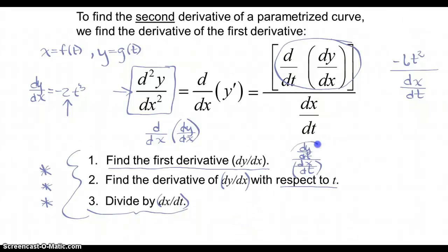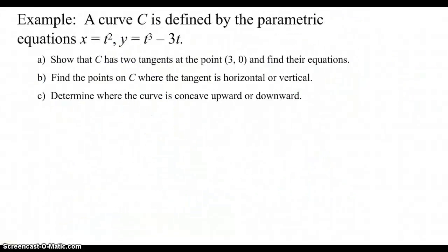Step 1: find dy/dx. Step 2: take the derivative of that with respect to t. Step 3: divide by dx/dt. Simple as that. Let's work an example. A curve C is defined by the parametric equations x = t² and y = t³ − 3t.